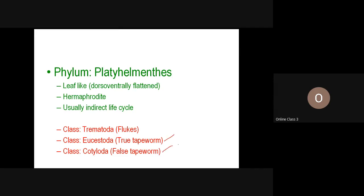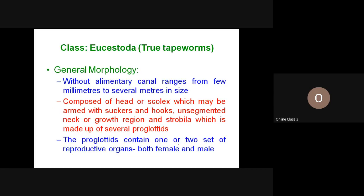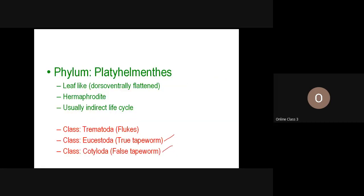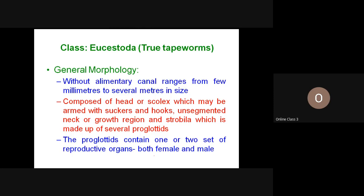In today's class we'll talk about Eucestoda and Cotyloda, which are generally known as tapeworms. Eucestoda are known as true tapeworms, and Cotyloda are known as false, fish, or pseudo-tapeworms. We will discuss their general characteristics, morphology, and life cycle.